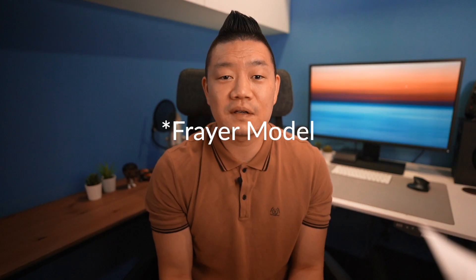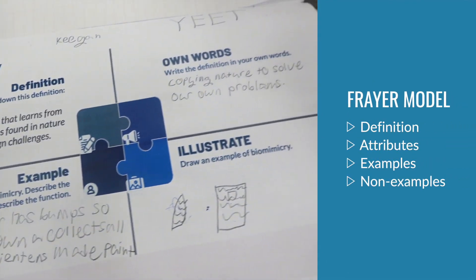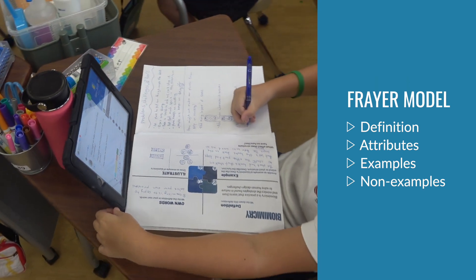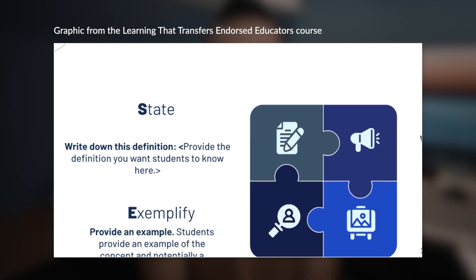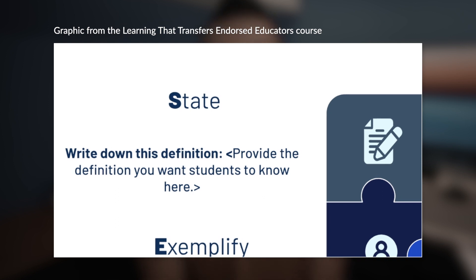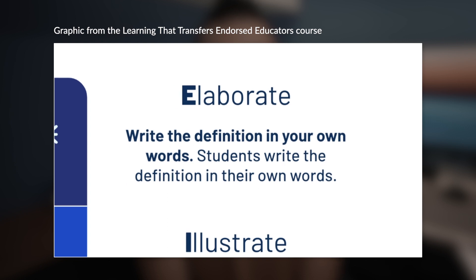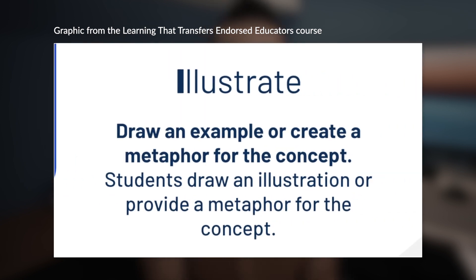The SEEI model is a graphic organizer divided into four sections where students write down the definition of the concept, its attributes, examples, and non-examples. The Frayer model also has four sections: Date, where you state the concept in a sentence or two; Elaborate, where students describe the concept in greater detail through paraphrasing; Exemplify, where students identify concrete examples to demonstrate the meaning of the concept; and Illustrate, which is a picture or diagram that represents the concept — or a picture with a metaphor or analogy.